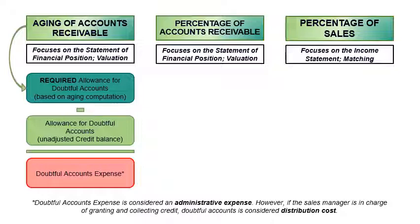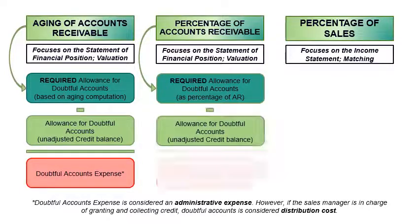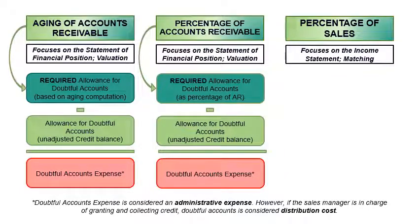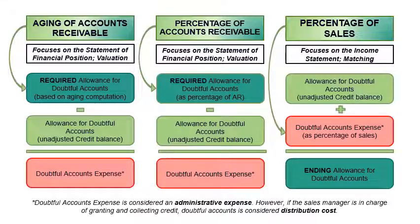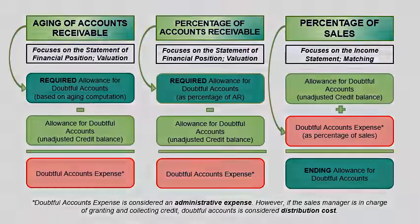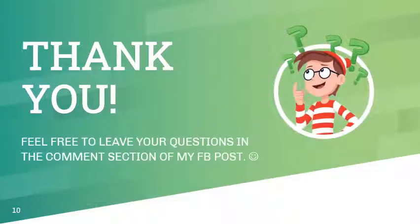Similar to aging, the percentage of accounts receivable method computes first for the required balance of the allowance for doubtful accounts and then the doubtful accounts expense. The percentage of sales method differs from the other two methods since it computes first for the doubtful accounts expense, which is then added to the unadjusted balance of the allowance for doubtful accounts to arrive at the allowance for doubtful accounts. The rate to be used is based on historical performance and applied to the credit sales during the period. And those are all for accounts receivable. Please feel free to leave your questions and comments in the comments section of my Facebook post. The next video will be on notes receivable.